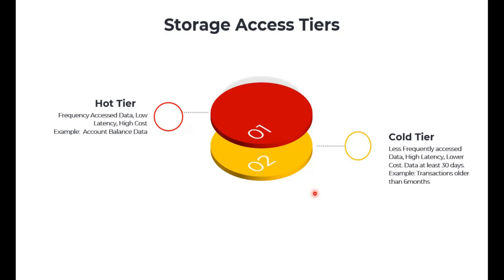The next one is the cold tier. When we talk about cold tier, the frequency of data access is much less compared to hot tier. The latency will be higher compared to hot tier, and the cost is a little lesser than hot tier. Data should be stored at least 30 days once you move it to the cold tier — that is the criteria enforced by Microsoft Azure.